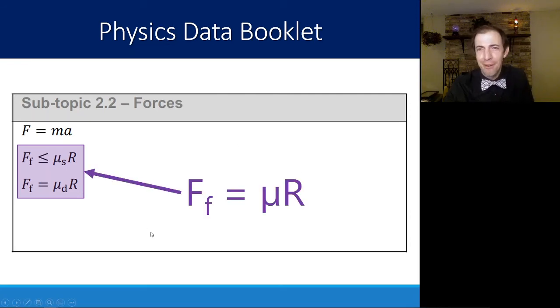In general, you can think of this relationship. It doesn't matter if you're using static or dynamic, just use the one that the situation requires. If it's moving or not moving, just know that it's μ coefficient of friction times R.